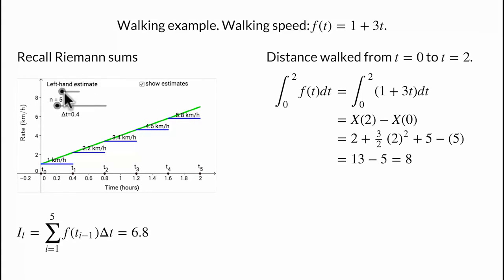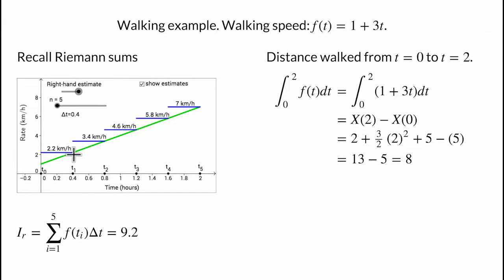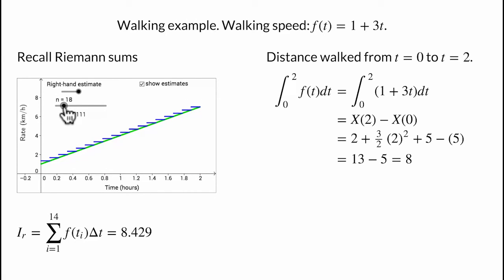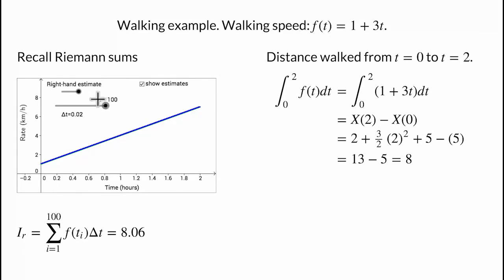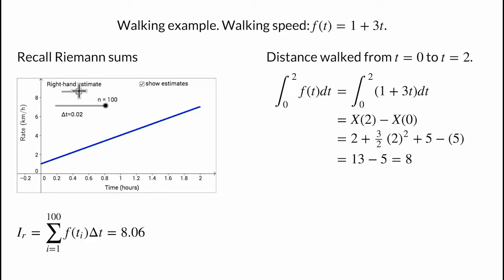We can also try a right-handed Riemann sum, estimating your speed in each interval by your final speed. In this case, when we compute the sum, we get 9.2 kilometers, which overestimates the distance you walked. If we increase the number of intervals, we get a better answer but with much more work. By the time we calculate 100 intervals, we are within 0.06 of the correct answer for both left and right Riemann sums. To actually get to 8 kilometers, we'd have to increase the number of intervals to infinity.